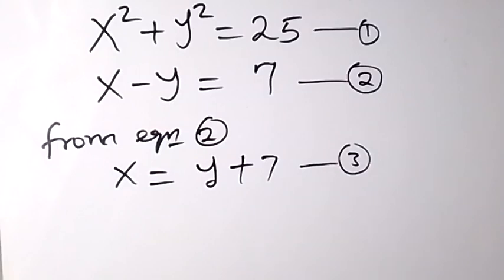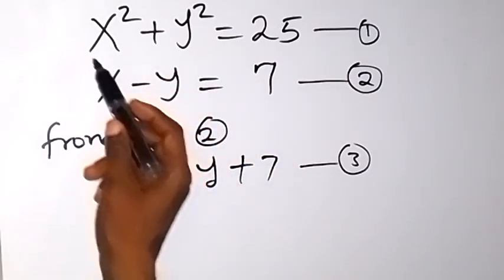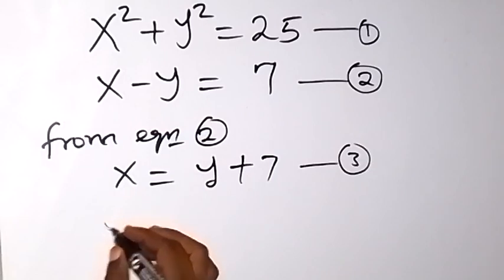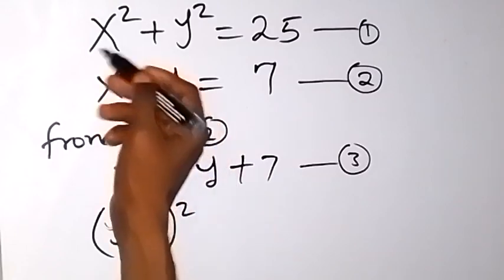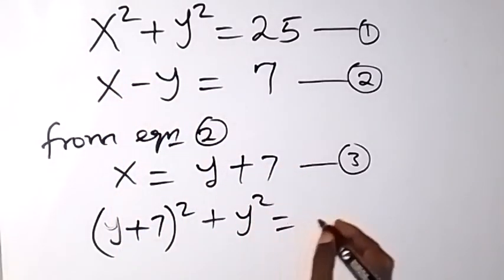From here, we can substitute the value of x, that is y plus 7 now, into equation 1. So in equation 1, anywhere we see x, we put y plus 7. Equation 1 has become y plus 7 all raised to the power of 2, then plus y squared equals 25.